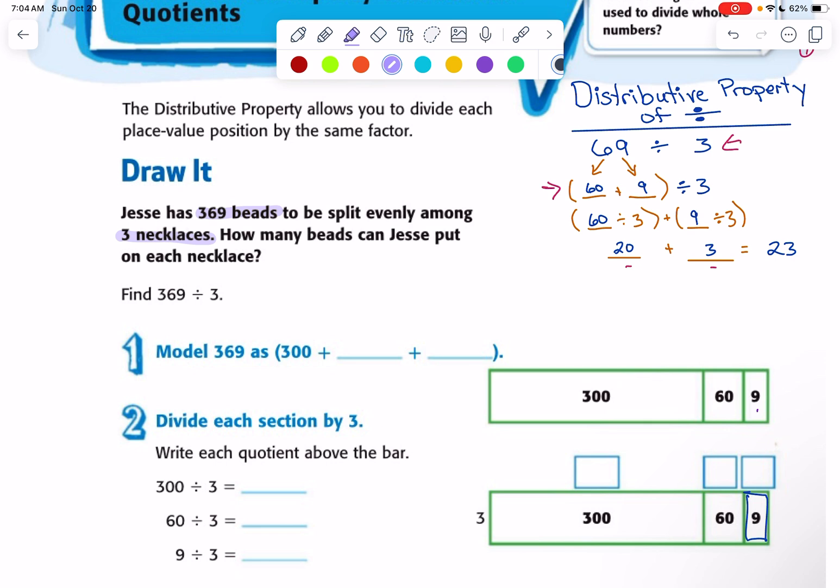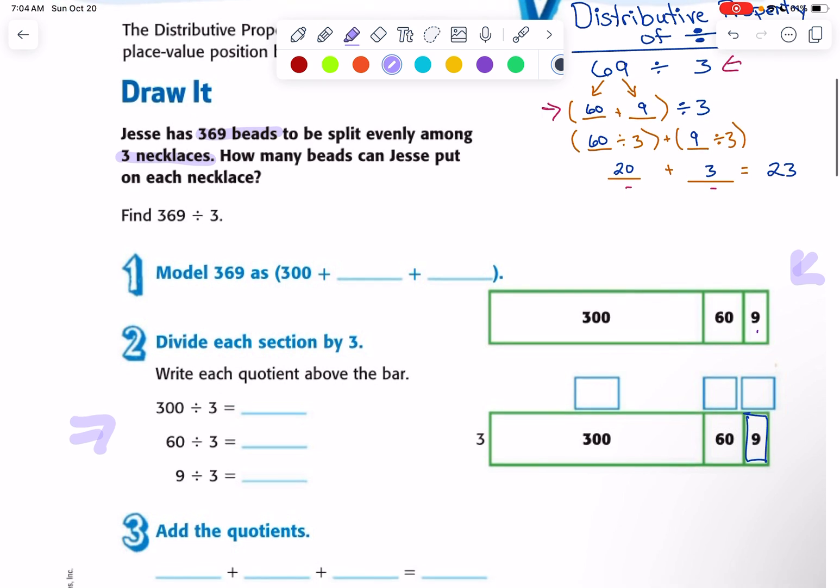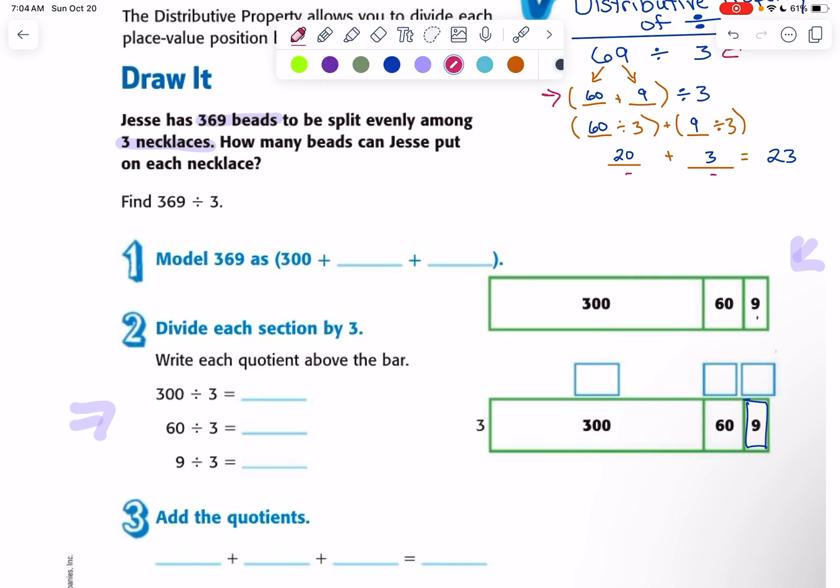So they're actually showing you two methods here. We're going to model the distributive method here, but they're putting it in an area model over here. First, they broke up 369 by its place values. 3 is actually 300, 6 is actually 60, and 9 is 9.